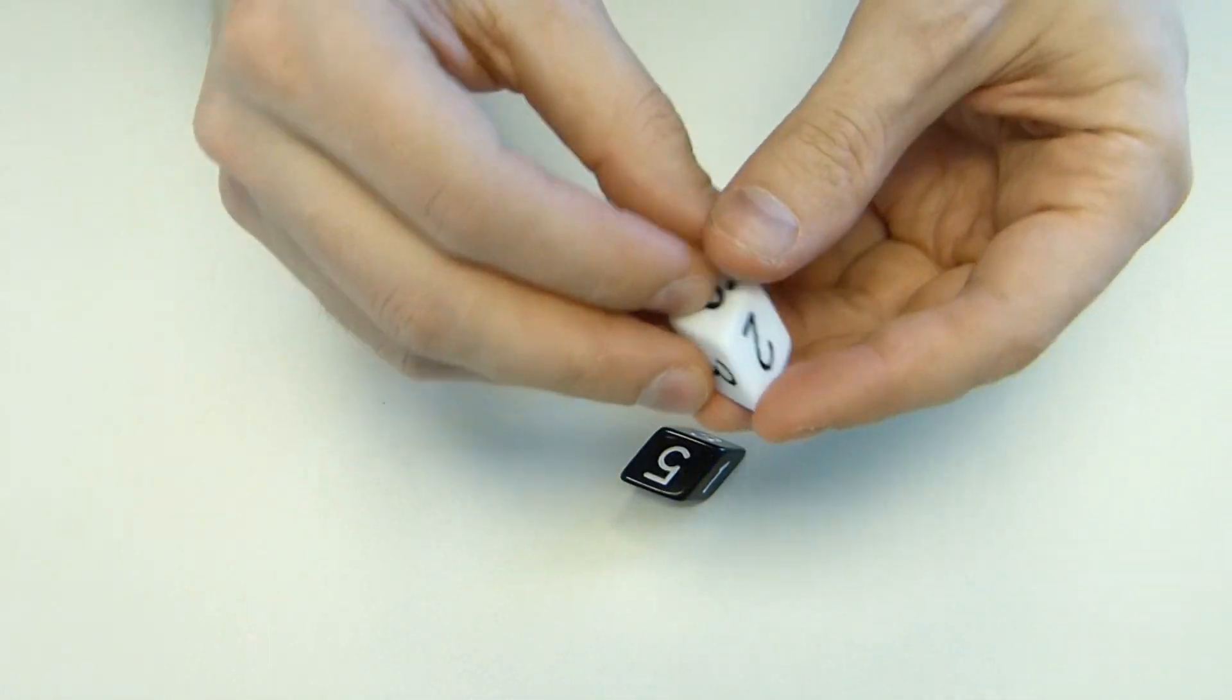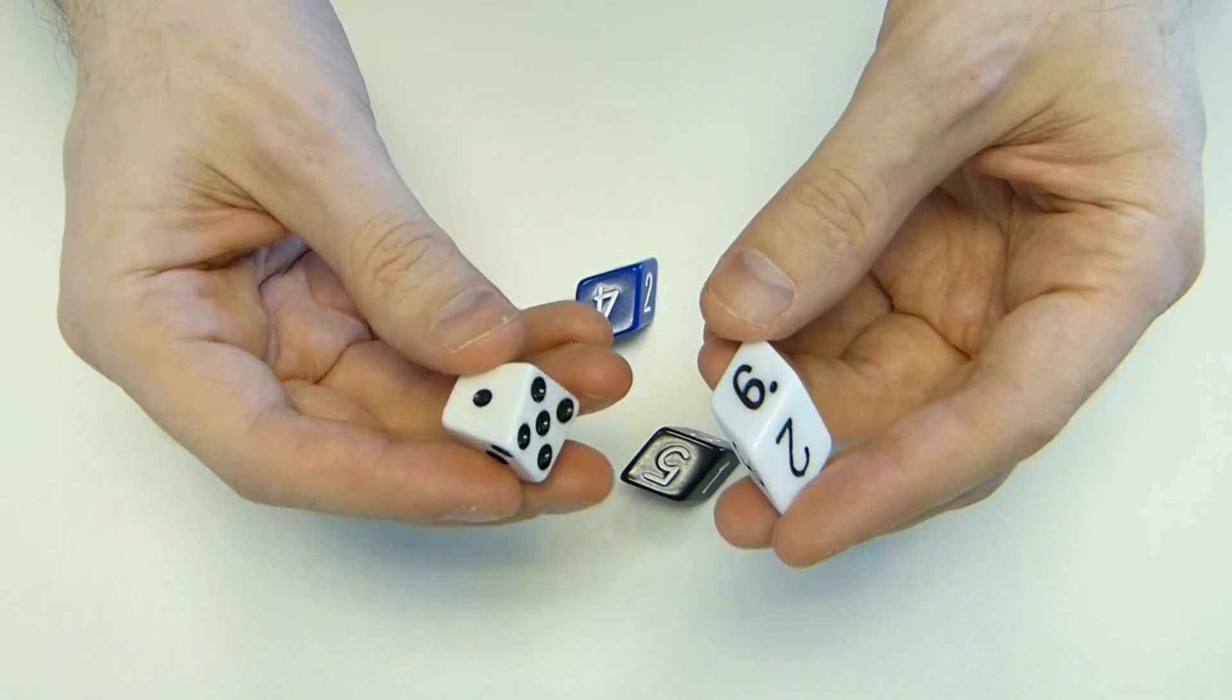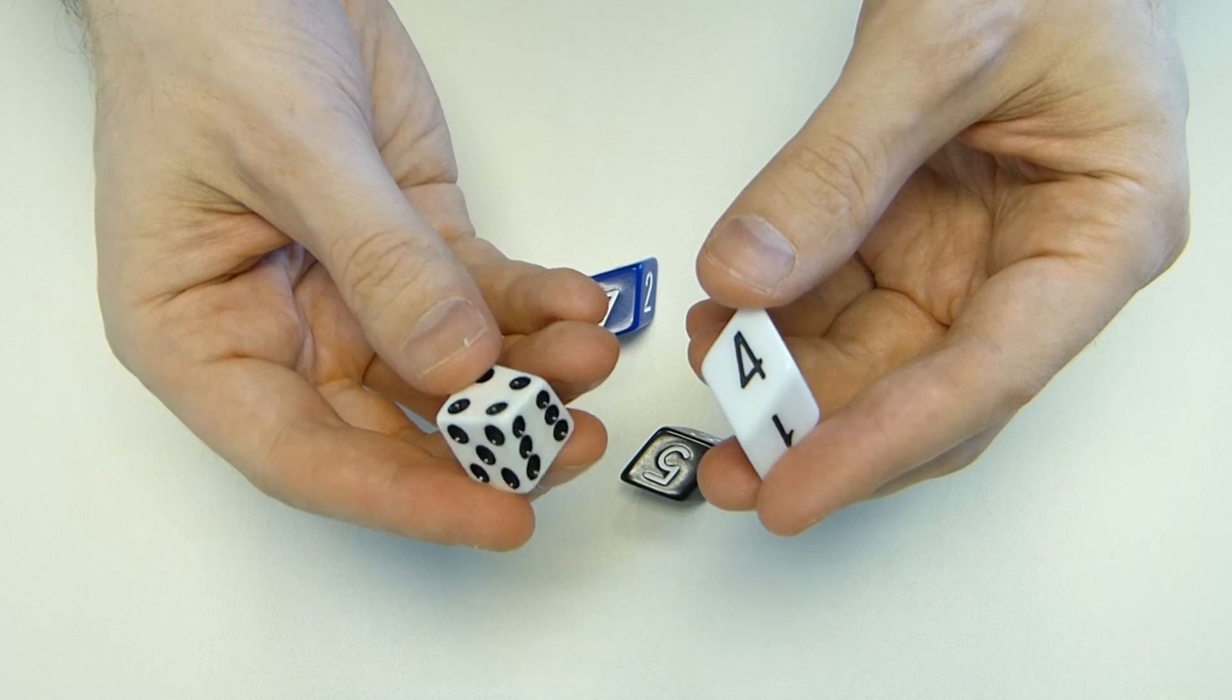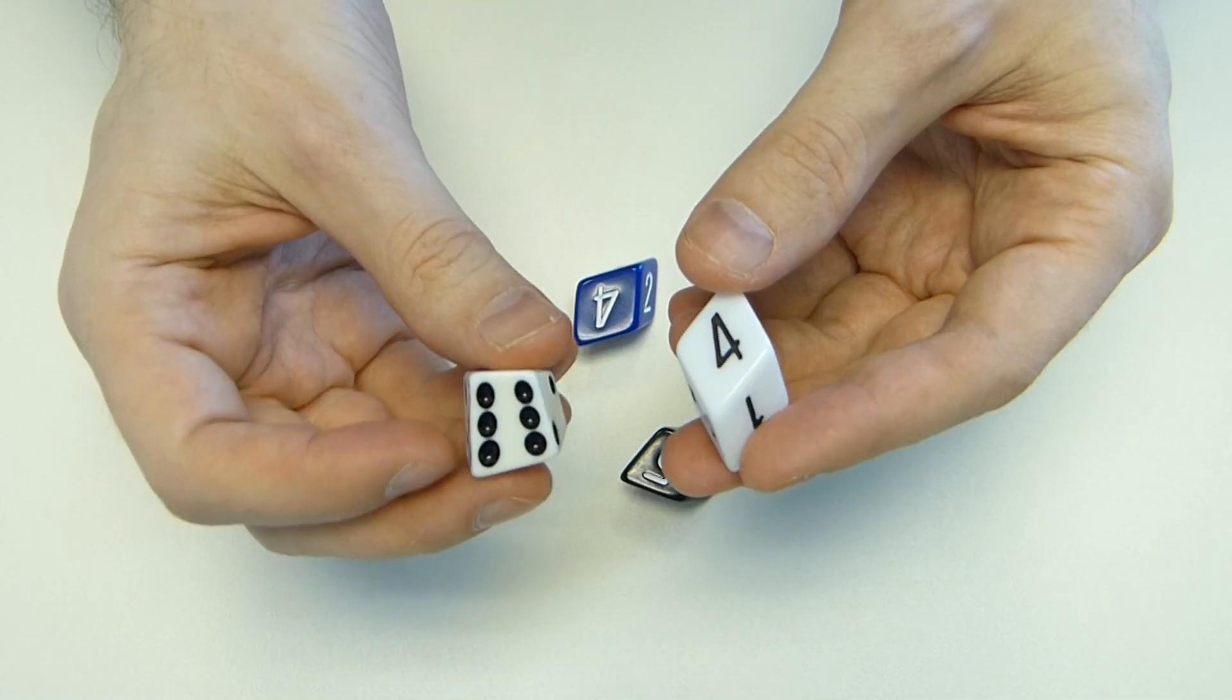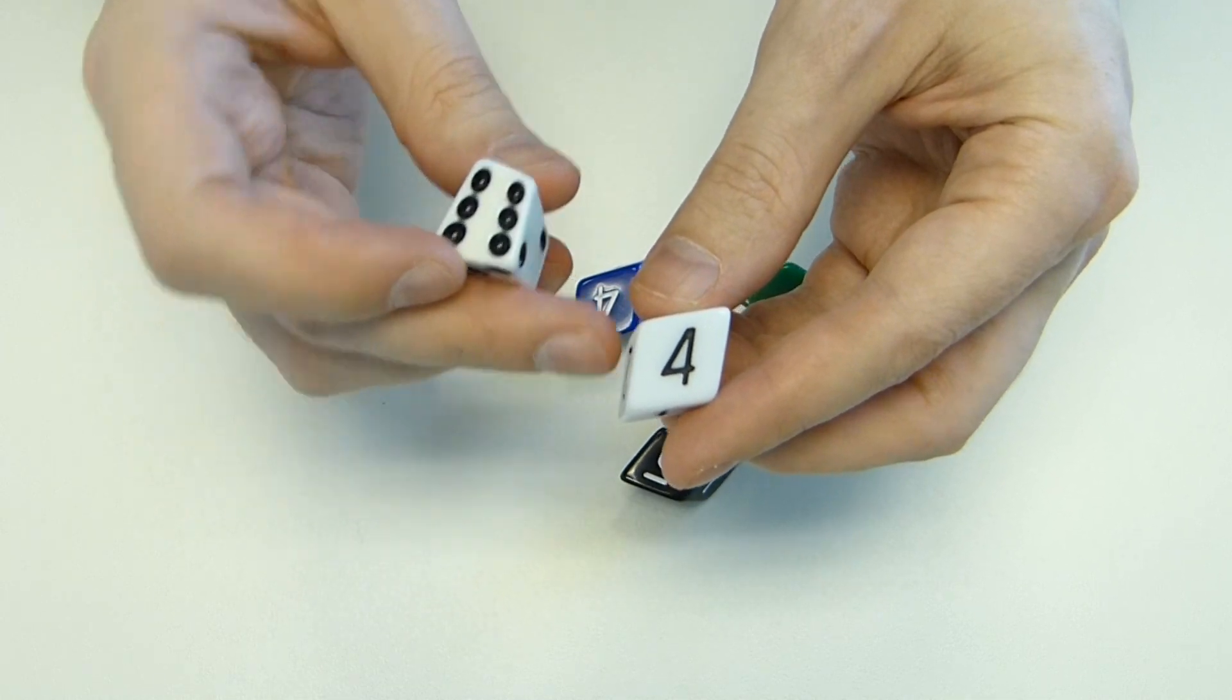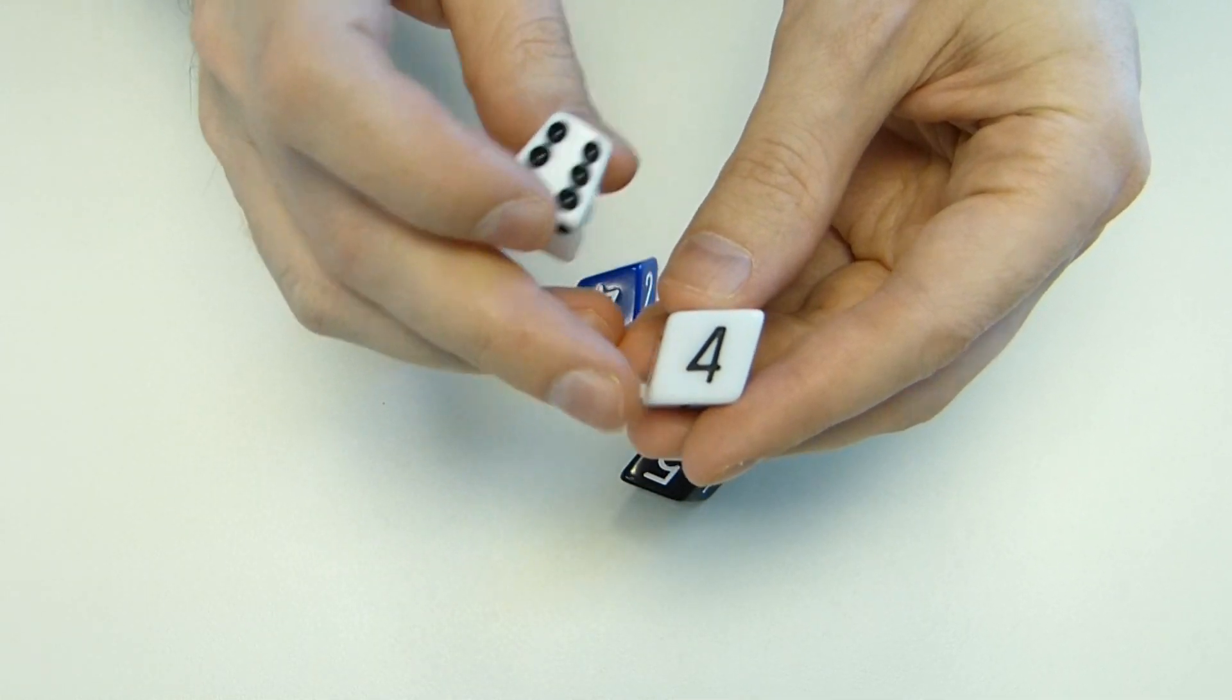These are sort of similar to our skew dice, but somehow less skewed. The skew dice, every face is some strange quadrilateral, but here they're a bit more regular. On the slant dice, these are rhombuses.